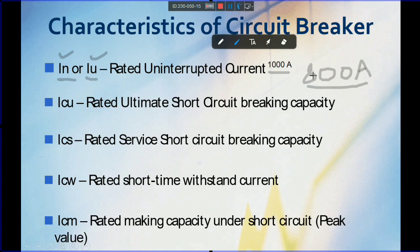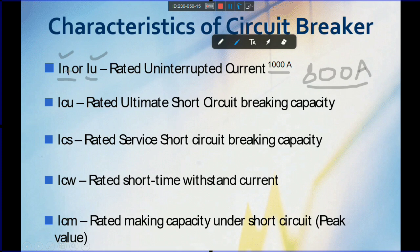MCBs do not have any additional rating plugs or trip units because they are low-cost breakers. So we do not have any adjustable parameters in MCBs — they have a single rated current represented as IN. For example, a 10 amp MCB will trip once it crosses 10 amps; it does not have an adjustable value. For MCCBs, however, we can take a 630 amp MCCB and adjust it to 400 or 500 amps. Breakers with adjustable parameters will have two rated currents: IU and IN.